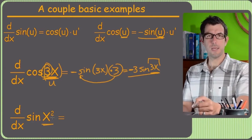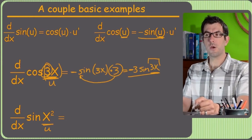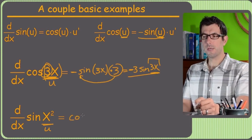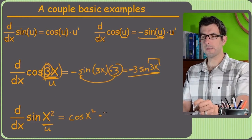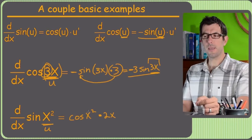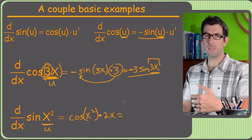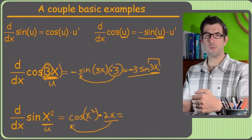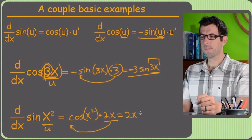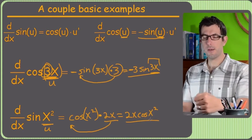Derivative of sine of x squared: u is x squared. Derivative of sine is cosine of that same u, so cosine of x squared, then multiply by u-prime, which is 2x. This does not mean cosine of x squared times 2x as one argument — it's cosine of x squared, then times 2x. So I like to take that 2x term and put it out front: 2x times cosine of x squared. No way to mistake that the 2x is inside the argument.